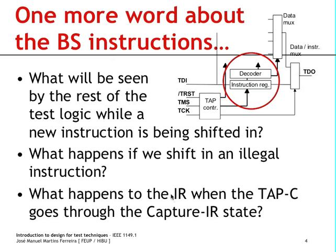An important feature to refer to is that the test access port controller is a small finite state machine that comprises various states. One of them is called capture instruction register. When we go through this state, the instruction register captures a given pattern which it scans out while we shift in a new instruction. So when we start to shift in a new instruction, the instruction register will automatically at the same time start to shift out this pattern that has been captured. According to the standard, the first bit shifted out shall be a one and the second bit a zero.